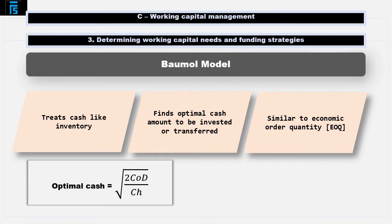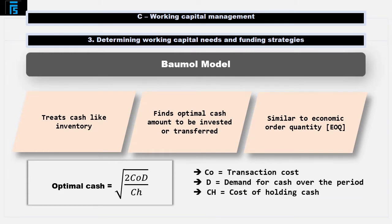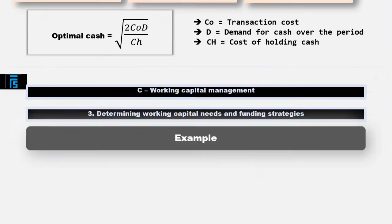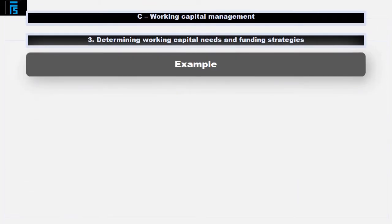Optimal cash equals the square root of 2 multiplied by CO multiplied by D, divided by CH. CO equals transaction costs, D is demand for cash over the period, and CH is the cost of holding cash.